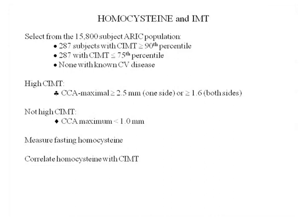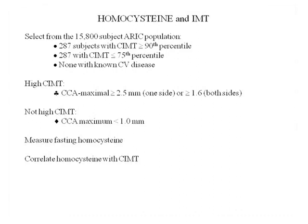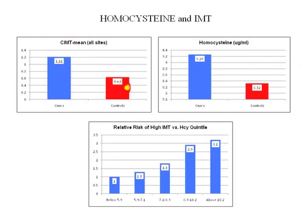Here we look at the ARIC study — the Atherosclerosis Risk in Communities study done in America. From 15,800 subjects, we select 287 with an IMT above the 90th percentile — the worst 10% — and for comparison, individuals below the 75th percentile with more favorable IMT, none with known cardiovascular disease. The high-IMT group's maximal IMT was above 2.5 on one side or 1.6 on both sides; those at the 75th percentile or below were much better, below 1. You measure fasting homocysteine and correlate it with IMT.